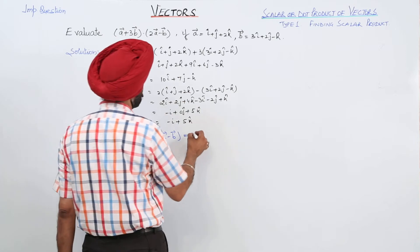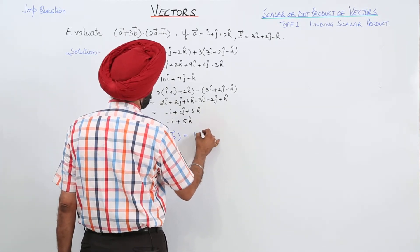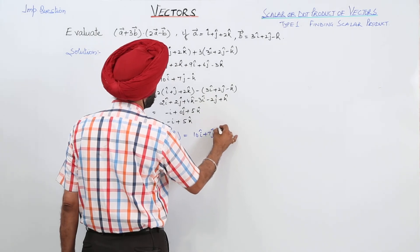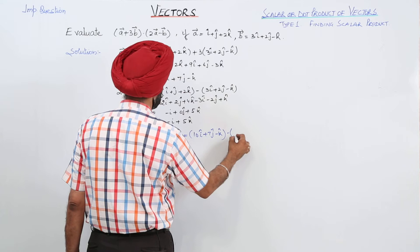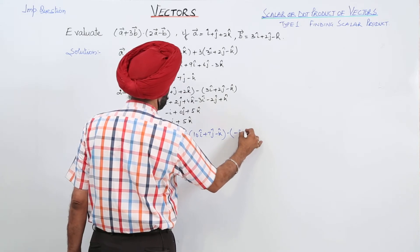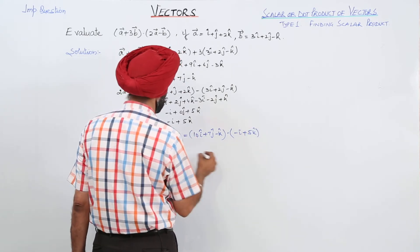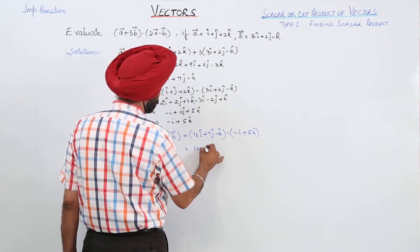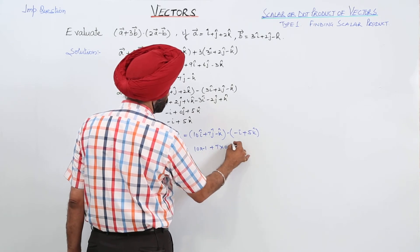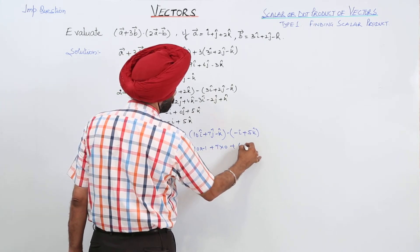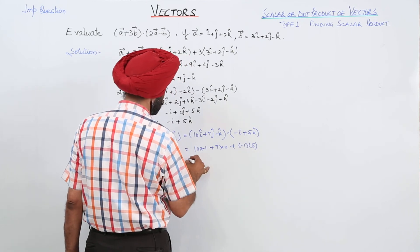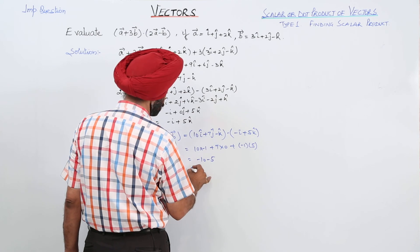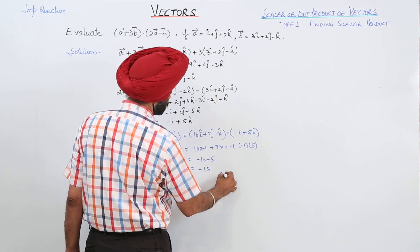Now evaluating the dot product: (10i + 7j − k) · (−i + 0j + 5k) = 10×(−1) + 7×0 + (−1)×5 = −10 + 0 − 5 = −50. This is the answer.